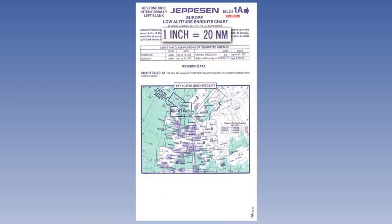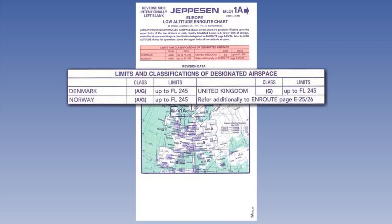Below the scale, there are some notes concerning the upper limits and airspace classifications within the area of coverage of the chart. We can see from these notes that the airspace covered by this chart encompasses Denmark, Norway and the United Kingdom, each having an upper limit of flight level 245.